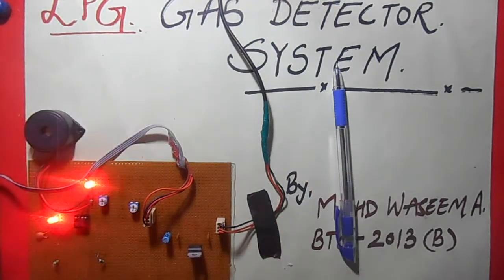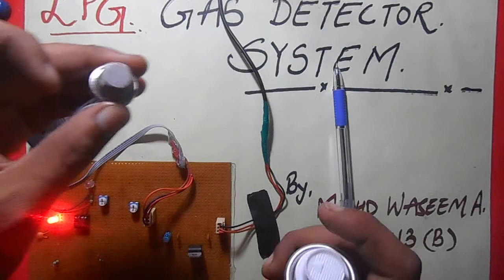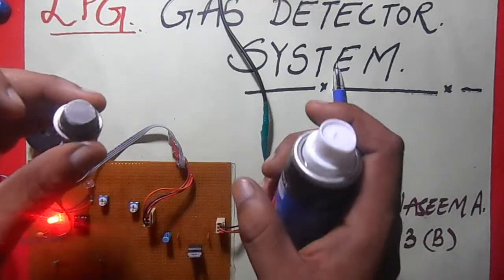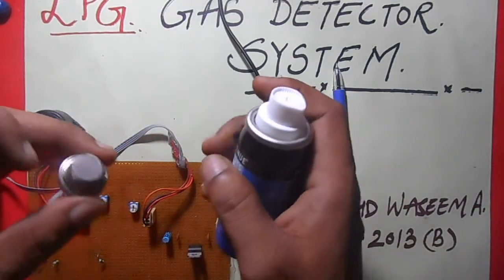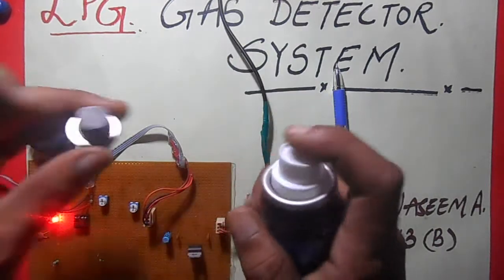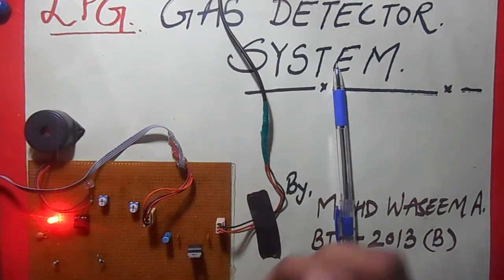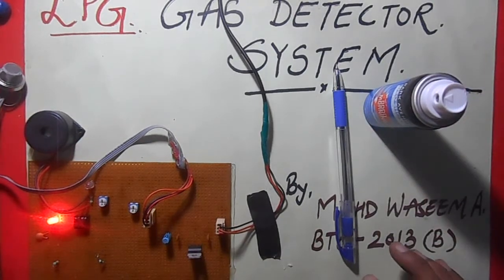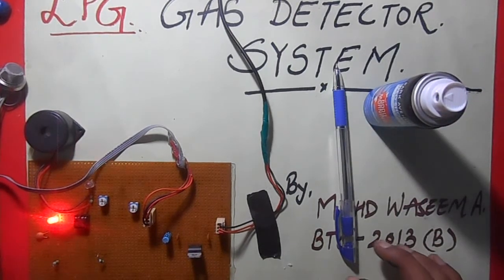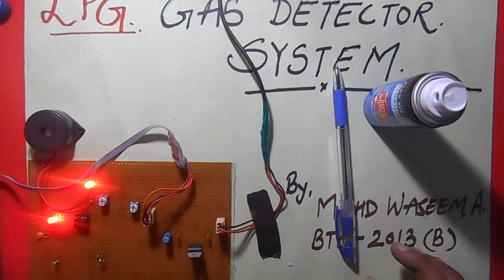And whenever it is stopped, whenever the concentration is less than the optimum amount, then the buzzer gets off. Suppose again I am providing it - buzzer is on. So this buzzer indicates if there is a leakage of gas in the cylinder.